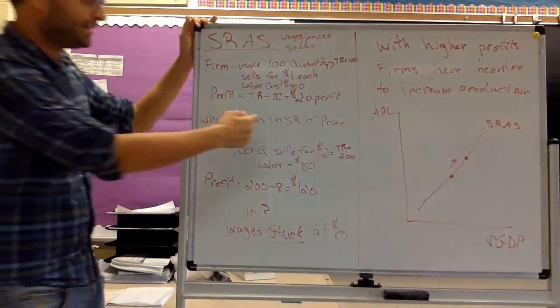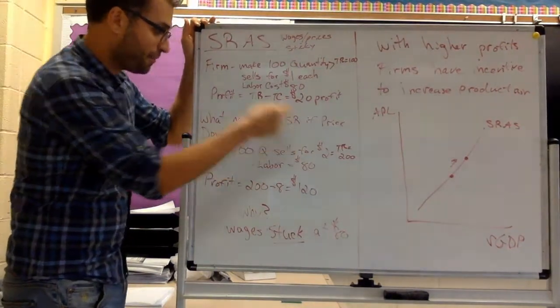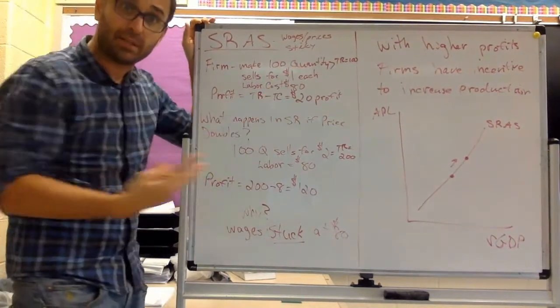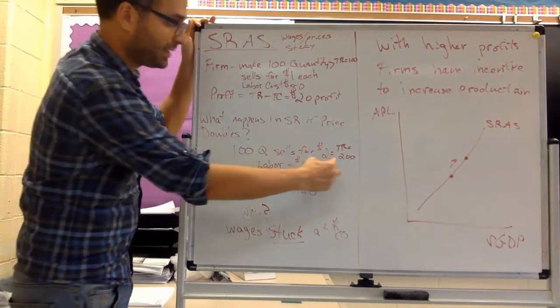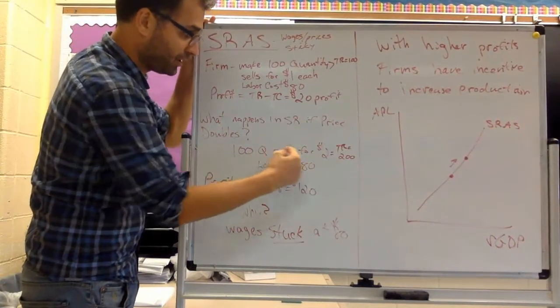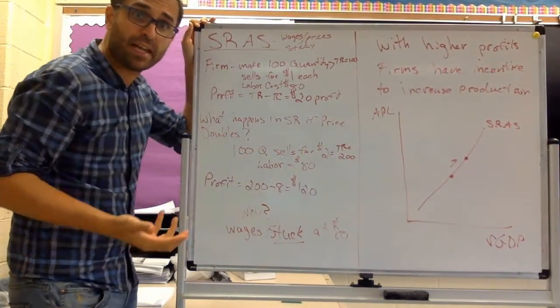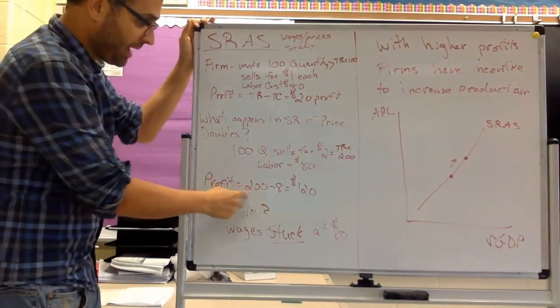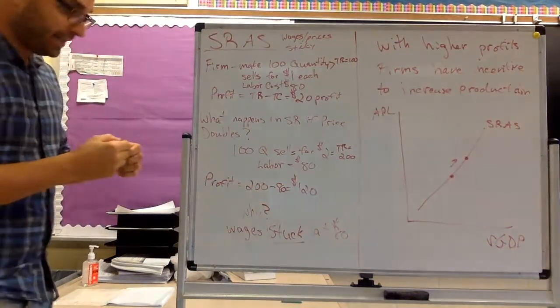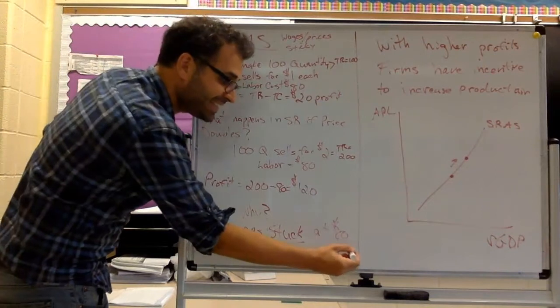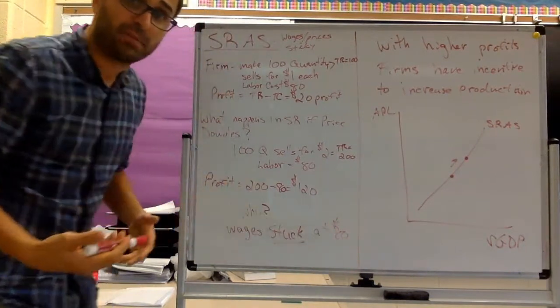Let's say what happens in the short run if price doubles for the good. So instead of $1, it's going to be $2. If it's $2 and the price is going to sell for a total revenue of 100 goods times $2, total revenue is $200. So what's my profit now? $200 minus $80 is $120. So profits are up. Why? Because wages stayed at $80. So there's a profit to be made.